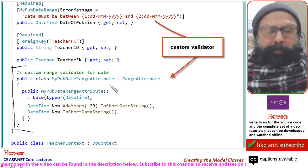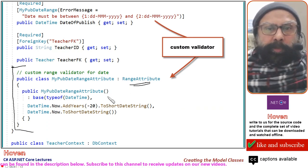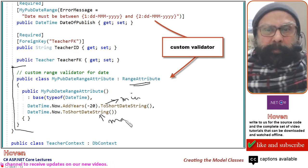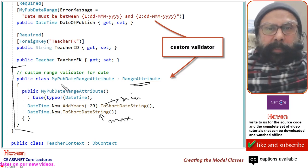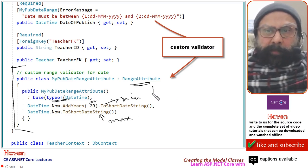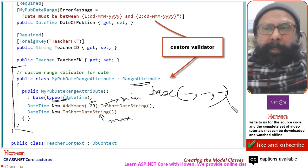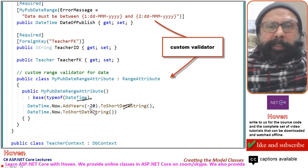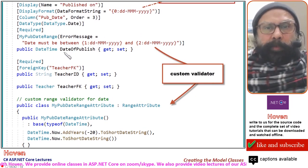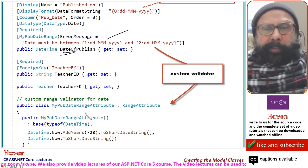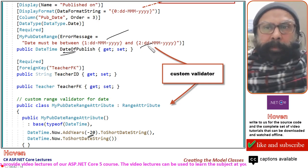The public class MyPubDateRangeAttribute inherits from RangeAttribute. The constructor calls the base class with DataType DateTime, and sets minimum as DateTime.Now.AddYears(-20) and maximum as DateTime.Now. The error message will say the date must be between 20 years ago and today. Whenever this property is set outside those limits, the custom error message is displayed.